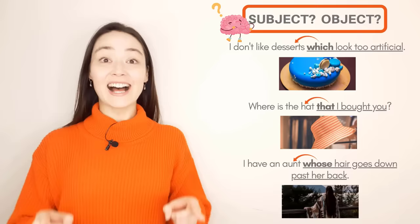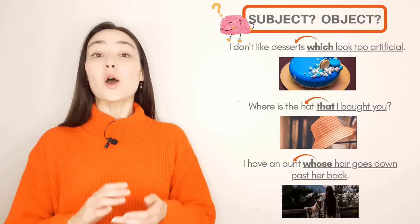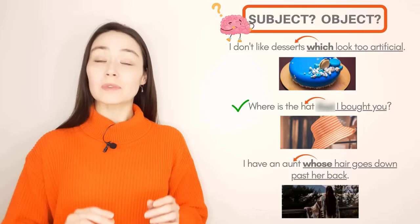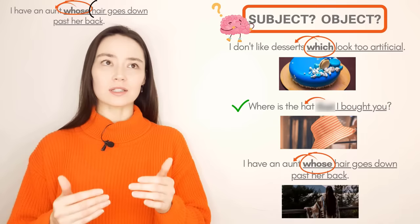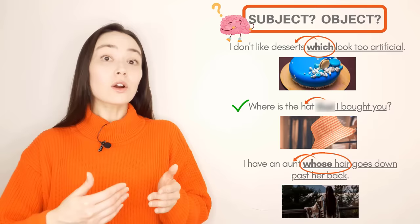Your turn. I have three sentences here — which relative pronoun can I remove? Pause the video if you need to. We can remove the second one — it's the object of the clause. 'Where is the hat I bought you?' is perfectly correct. In the first sentence it's the subject. And for sentence number three, you might be thinking: relative pronoun, subject, verb — I can remove it. But we never remove whose, because whose hair is the subject of the clause — her hair.